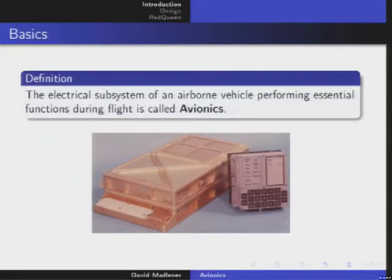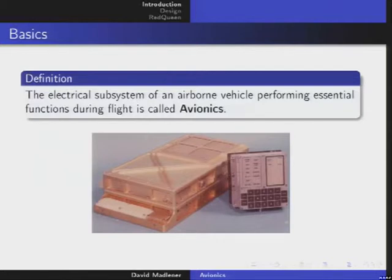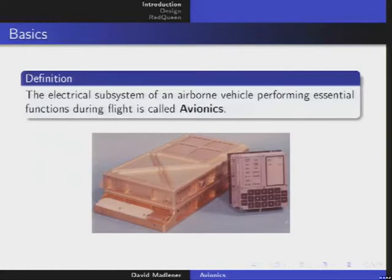What is avionics? This is a very broad term — it's everything that has something to do with electronics that is somehow flying. What you see here is the Apollo guidance computer that brought the lander to the moon, where there were some problems due to an overflow. This was a very complicated device at that time; today we would put it in a very small FPGA. It consumed a lot of power — hundreds of watts.